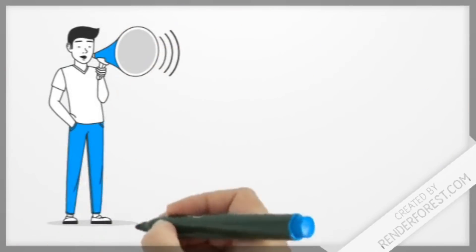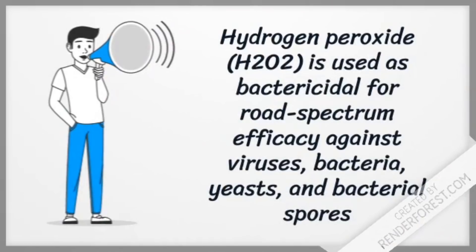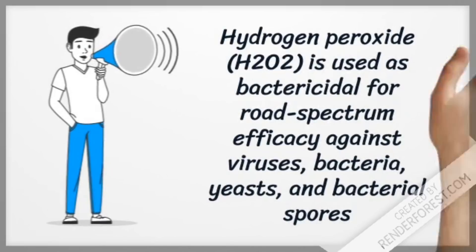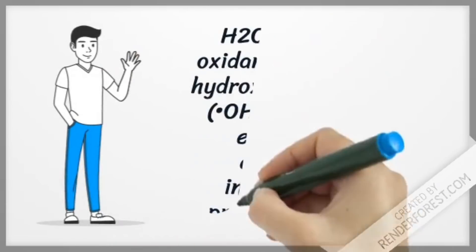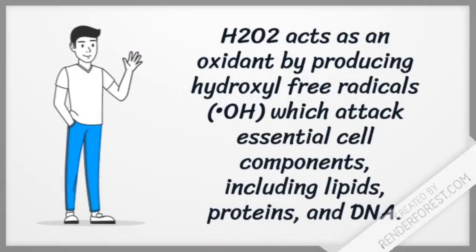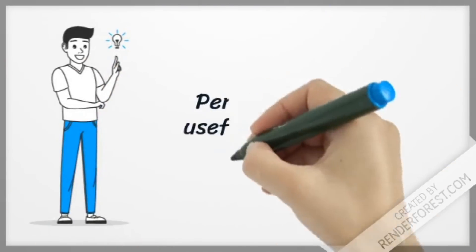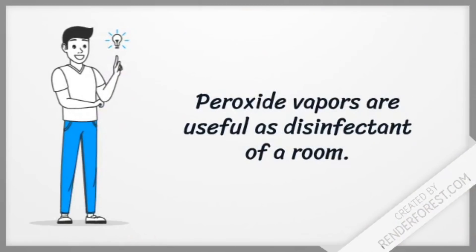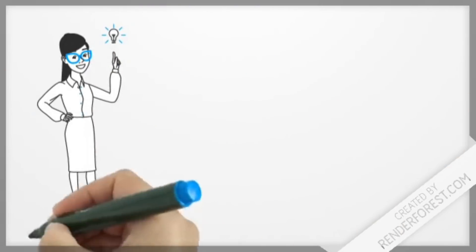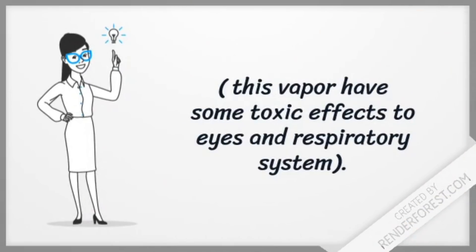Hydrogen peroxide is bactericidal and is effective against viruses, bacteria, yeast and spore-forming bacteria. It becomes effective when it produces hydroxyl-free radicals which attack the basic contents of the cell such as lipids, proteins and DNA. It's used to sterilize rooms by peroxide vapors. Caution should be exercised when using this vapor because it is considered toxic and affects eyes and respiratory system.